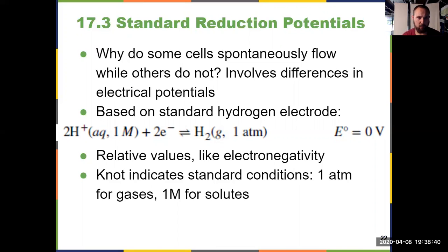All of our reduction potentials are based on the standard hydrogen electrode, or the SHE, which looks at two protons in an aqueous solution at one molar concentration coming together with two electrons to form H2 gas at a pressure of one atmosphere. Under those exact conditions, we assign that reduction potential to be equal to zero volts because then we have a reference and we can compare all other cells and reduction potentials to that reaction. They're all relative values, like electronegativity. Notice the knot after E - that's telling us it's standard state conditions: pressure of one atmosphere, concentration of one molar.